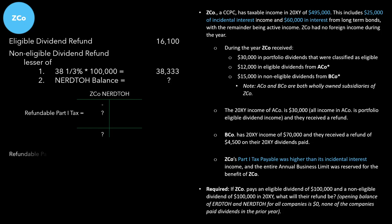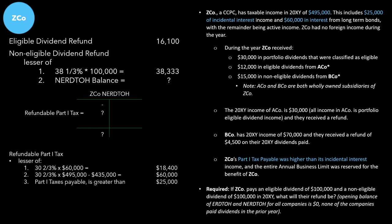When we go to calculate the refundable Part 1 tax, we look at the lesser of: 30⅔% × $60,000, which is our aggregate investment income — in our case, the long-term interest from the bond; 30⅔% × taxable income minus the amount sheltered by the small business deduction; and then we compare it to Part 1 taxes payable. We weren't told what Part 1 taxes payable was, but we do know it is greater than the incidental interest income. The least of these three amounts is $18,400.